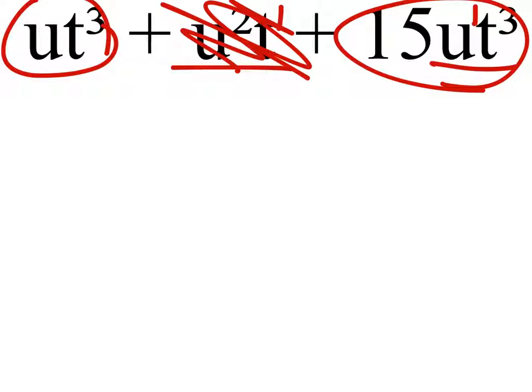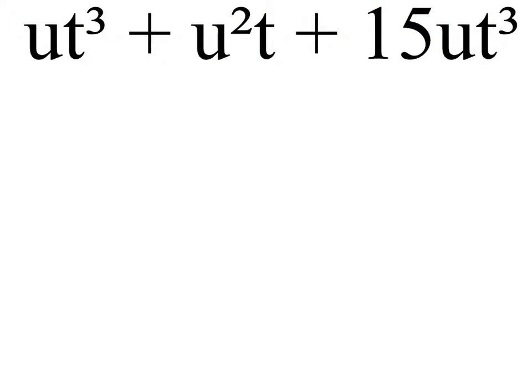But if we look, we can see that this first term has an exponent of u of 1, and the exponent of t is 3. That's the same as this term here, so we can combine those. Additionally, it may be helpful for you to see a 1 in front of that ut cubed in the front.